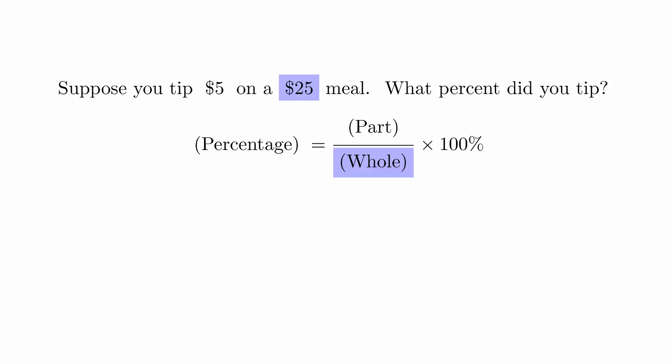The tip is the quantity you're measuring relative to the cost of the meal, and that is your part. And the percentage is the number you're trying to determine.